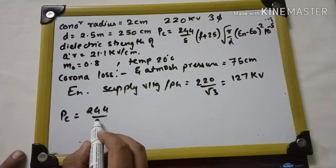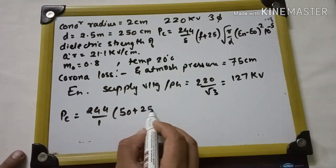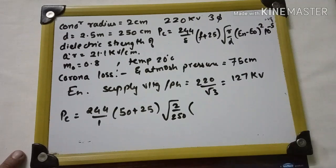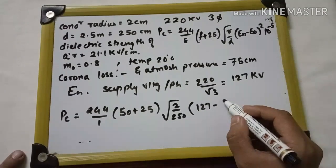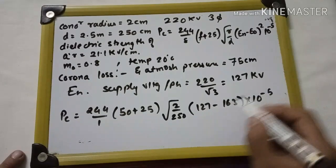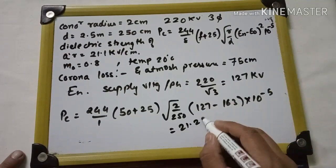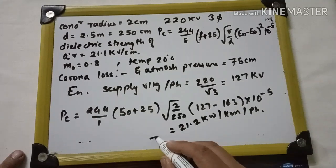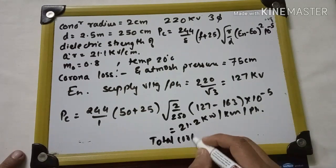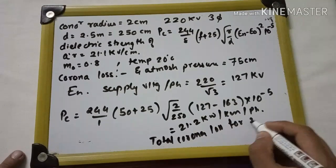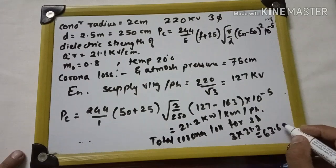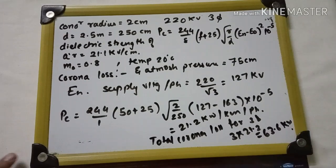Now we calculate the corona power loss: Pc = (244/1)(50 + 25) × √(2/250) × (127 - 163)² × 10⁻⁵ = 21.2 kW per kilometer per phase. The total corona loss for a 3-phase line is 3 × 21.2 = 63.6 kW. This is the way to find out the corona power loss.